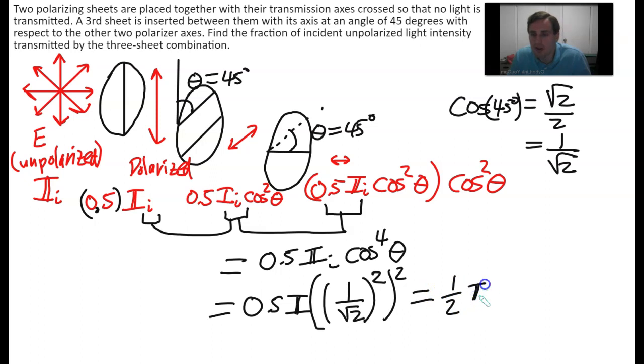So this should be 0.5, which is a half, I_initial, and then that times one fourth. So what do we get? We get this initial intensity divided by eight. So it's one eighth. Now if you wanted that as a decimal you'd have 0.125 I_initial.